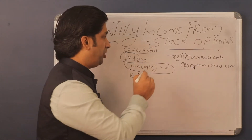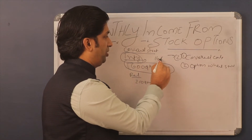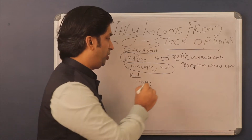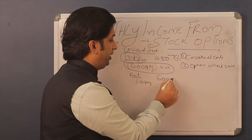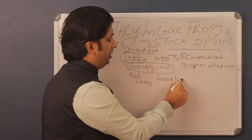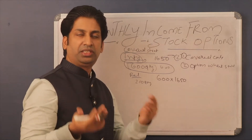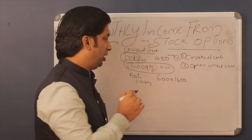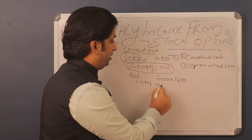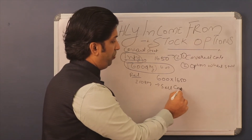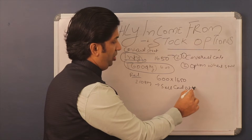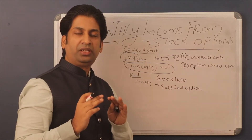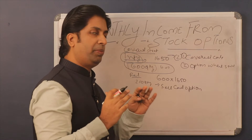Let's assume you have bought 600 quantities of Infosys at 1650. The current Infosys price is 1650. Every month what you have to do is sell a call option.